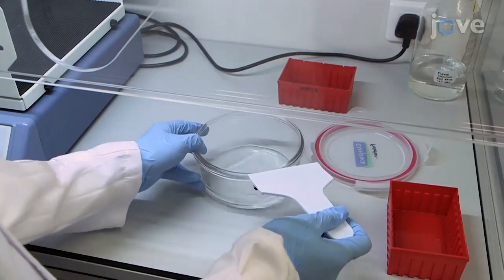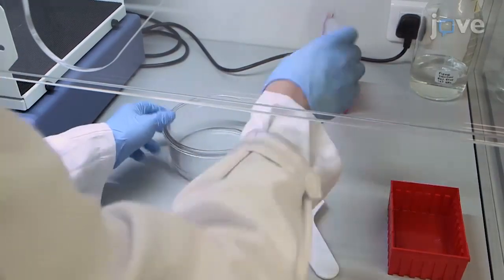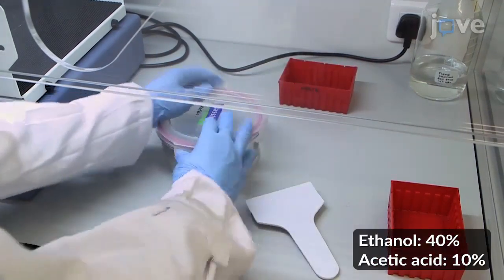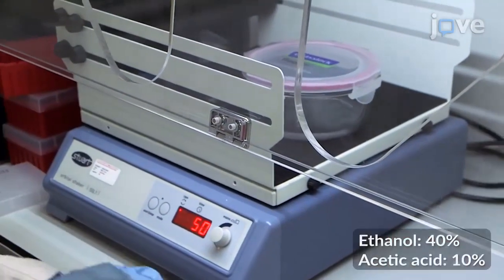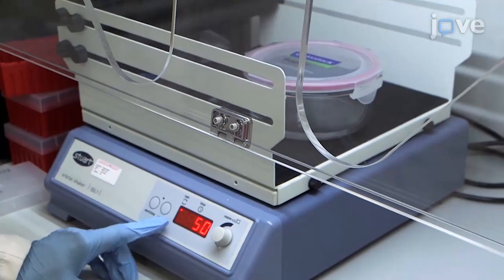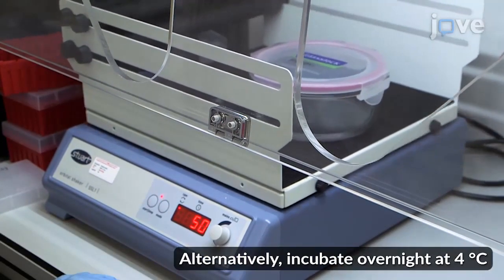After electrophoresis, submerge the gel in a 100 mL solution containing ethanol and acetic acid on an orbital shaker, and incubate twice for 30 minutes each at room temperature while shaking at 50 RPM.